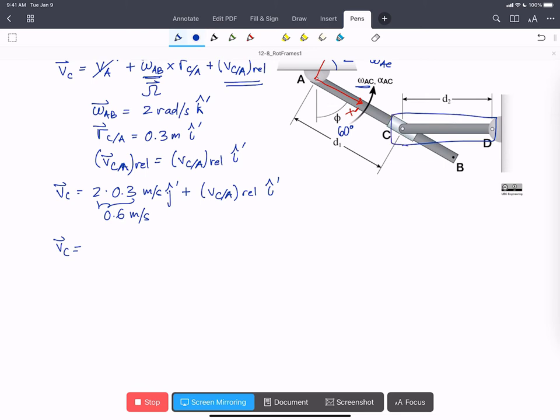Now the collar C is pinned to this rod, so we can use the regular relative motion equation here. So we're going to get v C equals v D, that's of course 0, plus omega CD, cross r C with respect to D. And that's our whole equation.